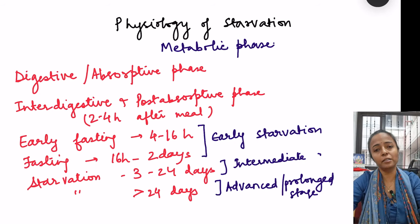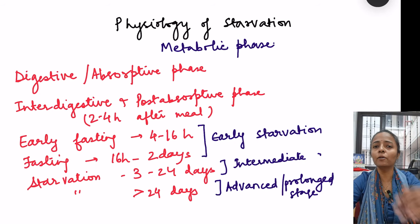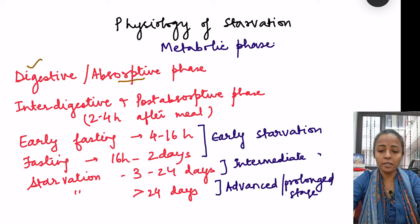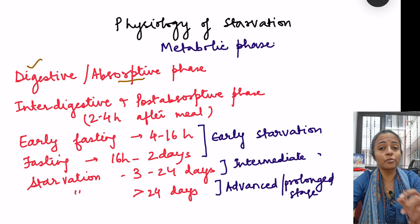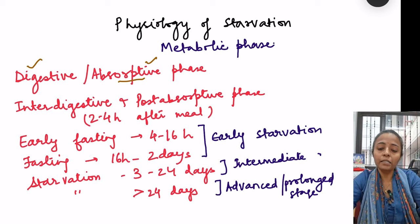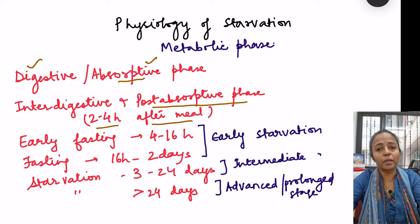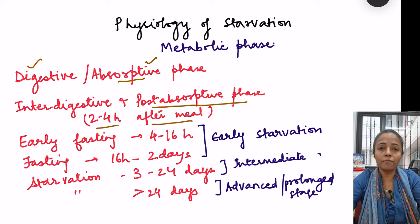Metabolic phases can be divided into different phases depending on when the last meal was taken. We have the digestive or absorptive phase, which is within two hours of taking a meal, because during that time absorption is taking place. Then we have the inter-digestive or post-absorptive phase that lasts two to four hours after the meal.